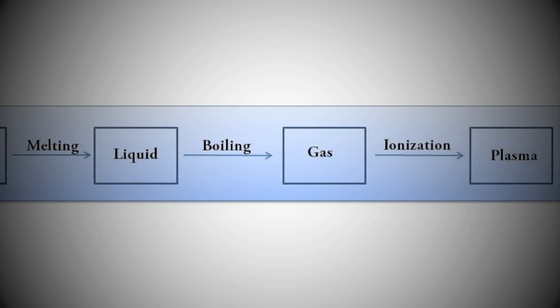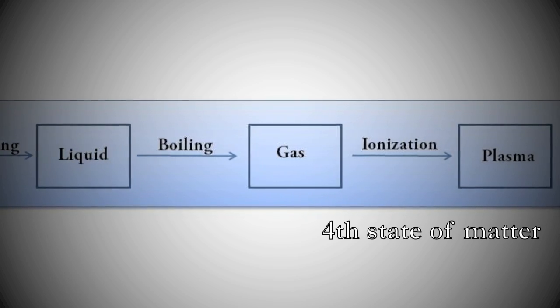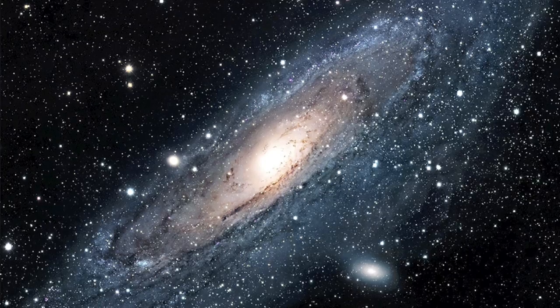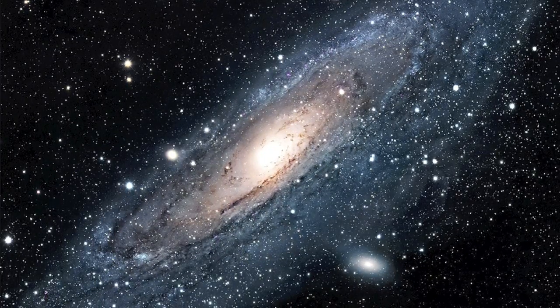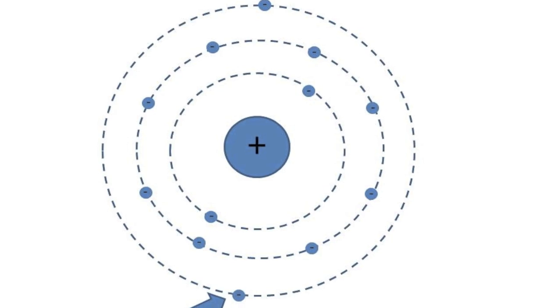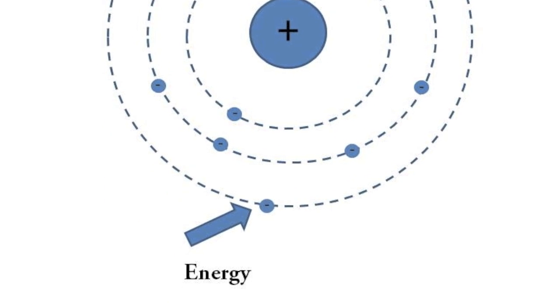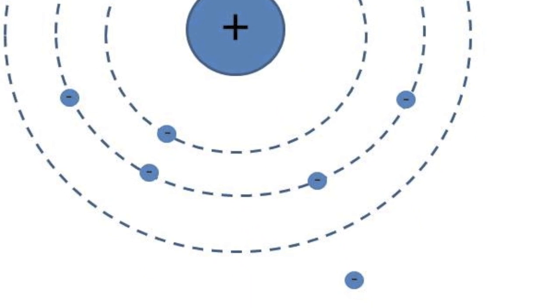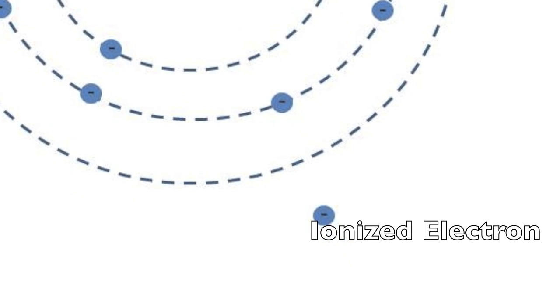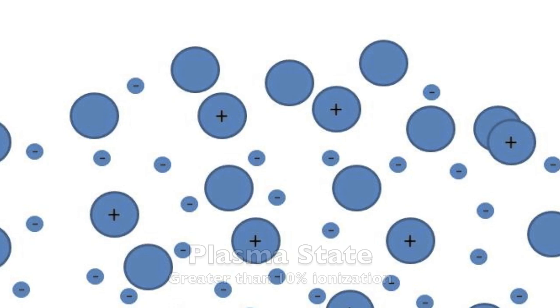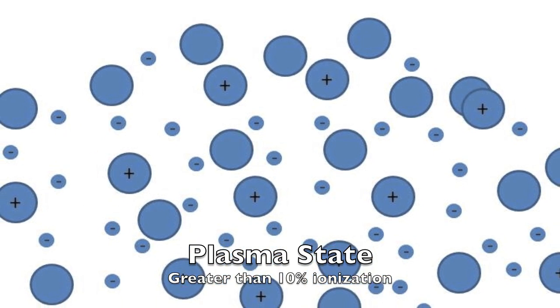Plasma is referred to as the fourth state of matter and over 99% of the universe is in the plasma state. So what is plasma exactly? If you take a gas and apply enough energy into that gas, at some point electrons will have enough energy to leave the atoms. This is known as ionization. And if over 10% of the gas is ionized, the formation of plasma occurs.